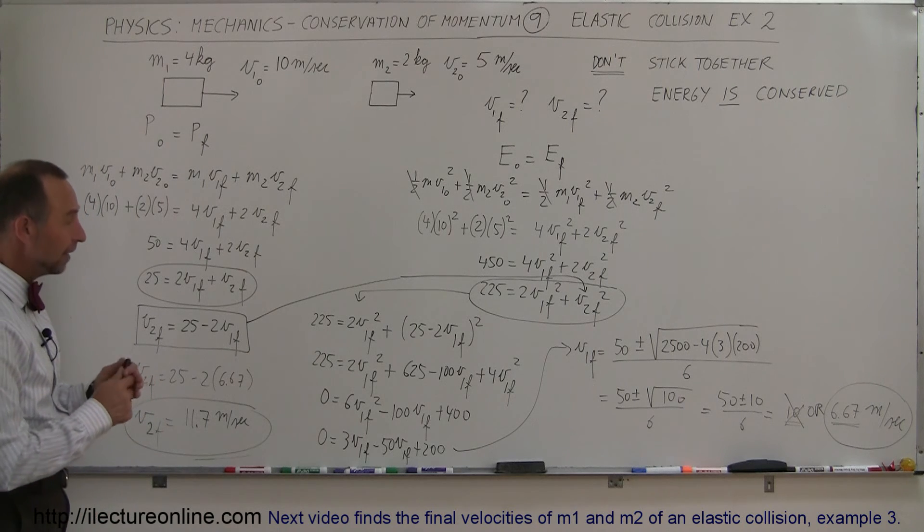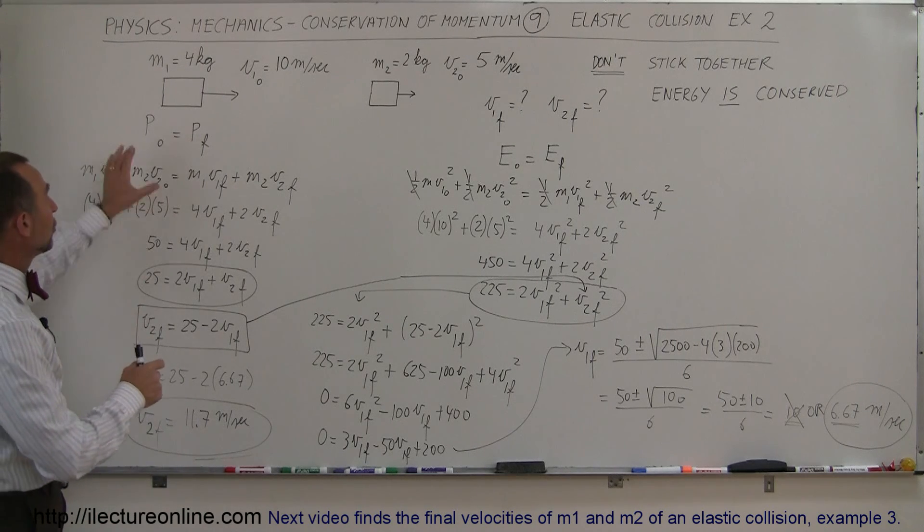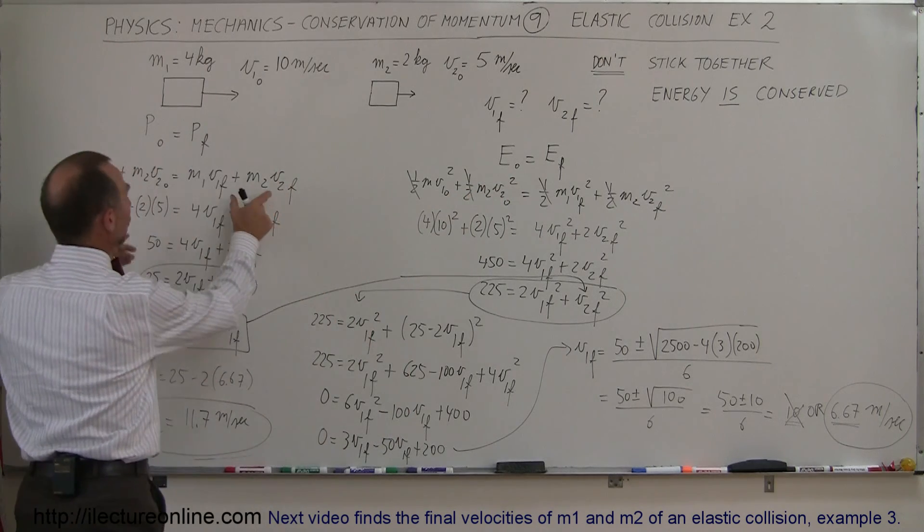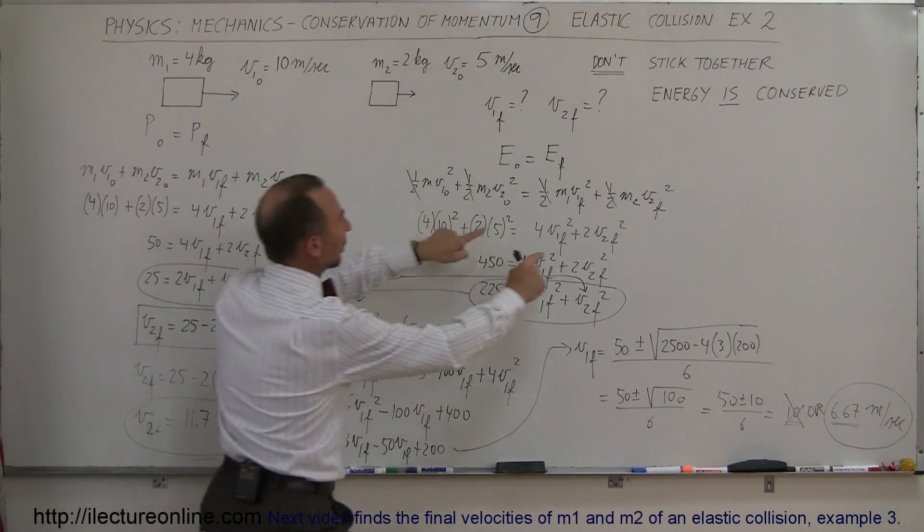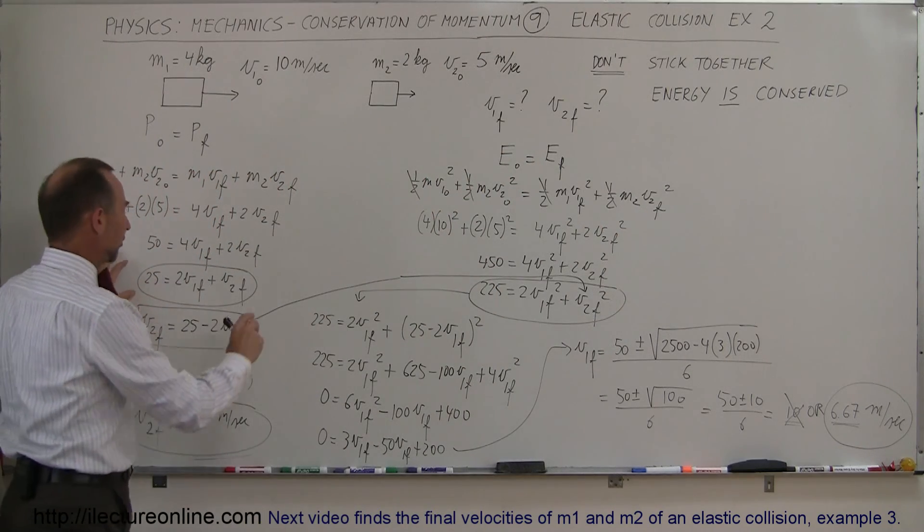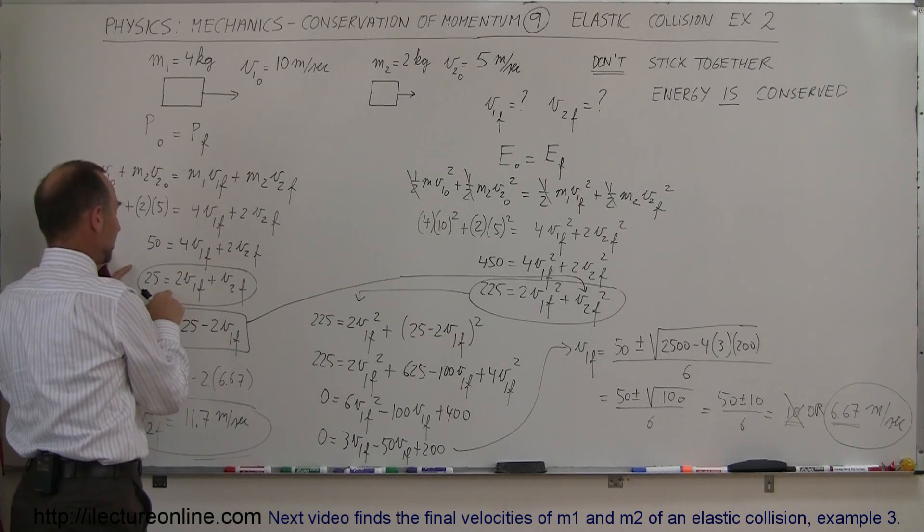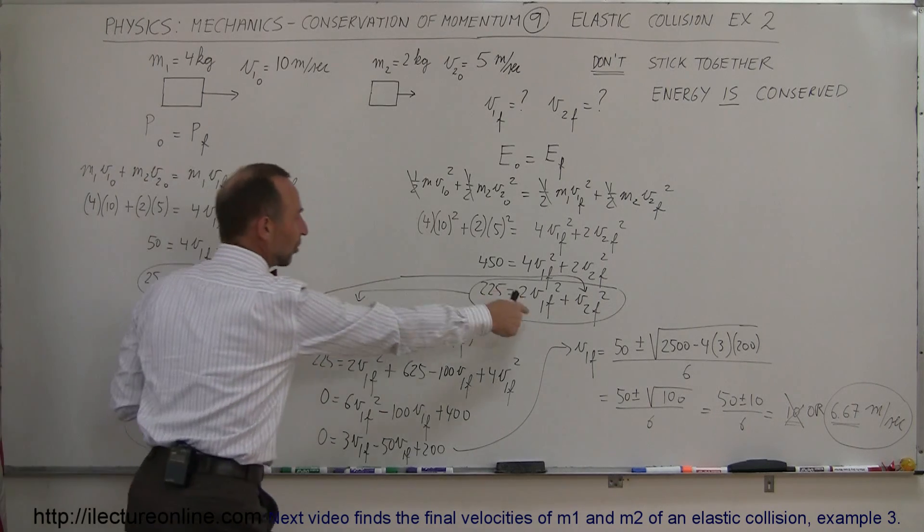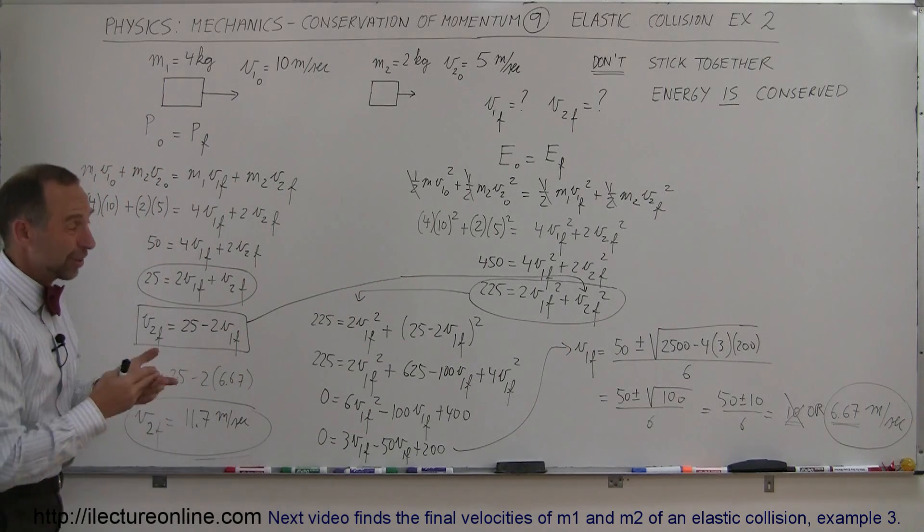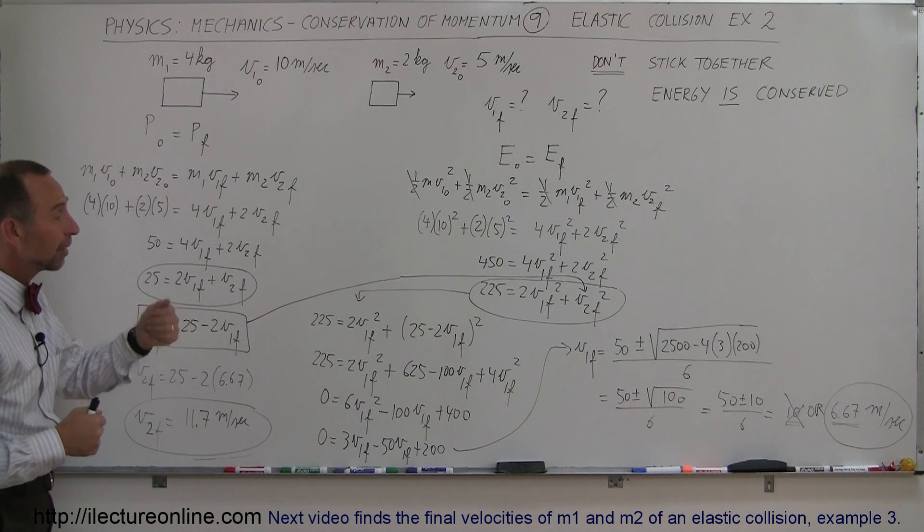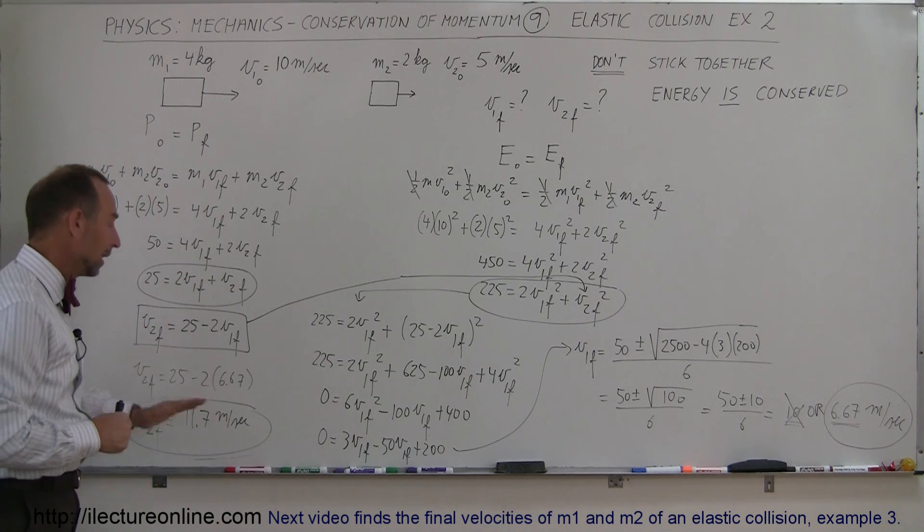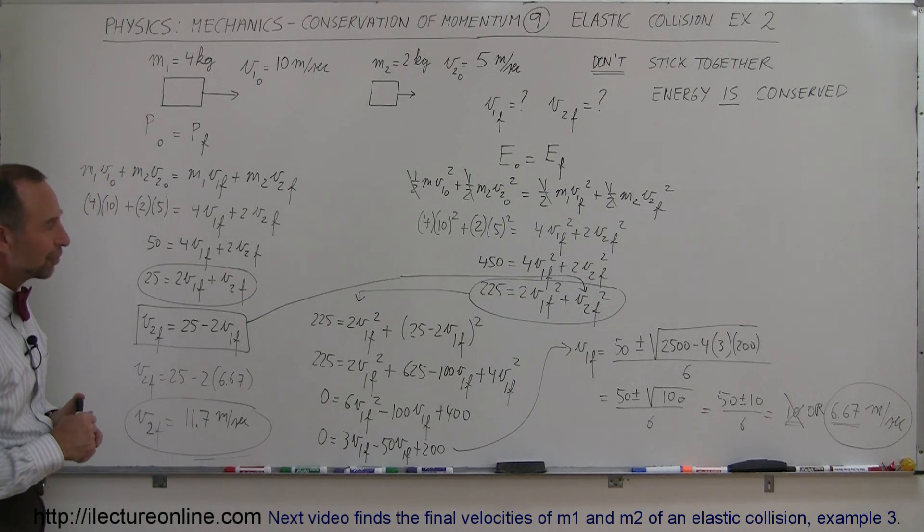So here you can see how this problem works. You use conservation of momentum, conservation of energy. You have two unknowns in each equation. V1 final and V2 final, right there and right there. You solve them simultaneously. Once you have the two equations simplified, you solve for one variable in terms of the other, plug it into the second equation, use the quadratic formula, and then you get two possible answers. One of them, not a likely answer. The other one is the most probable answer. You take that one and then you go ahead and plug it in here to get the second one. And there's your two velocities for V1 final and V2 final.